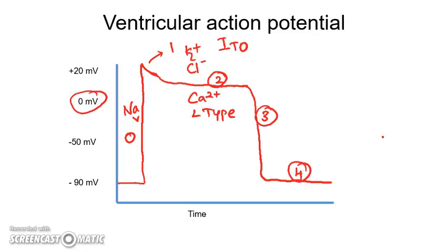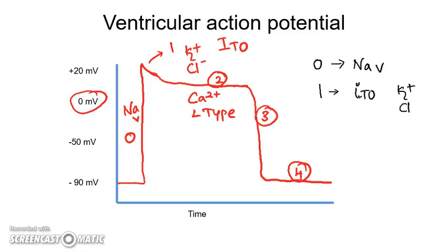In summary: Phase 0 is the resting membrane potential (Phase 4). Phase 0 is characterized by voltage-gated sodium channels opening. Phase 1 is characterized by a transient outward current called ITO, due to potassium channels opening and chloride channels opening — potassium ions go outside and chloride ions come inside.